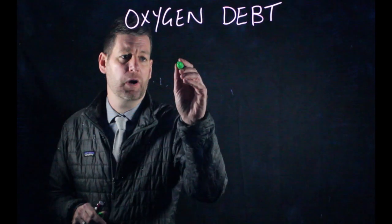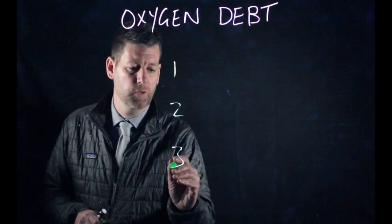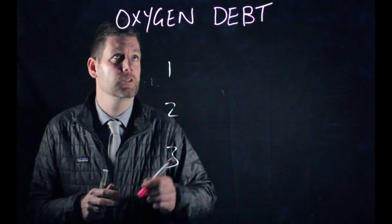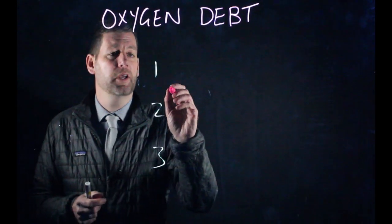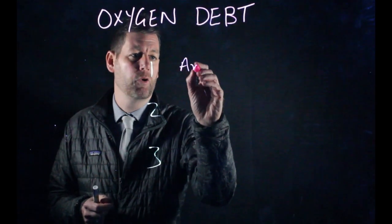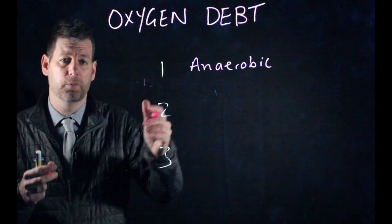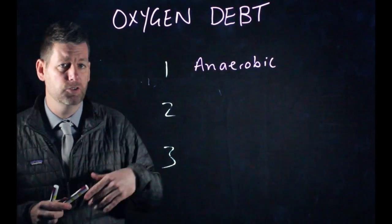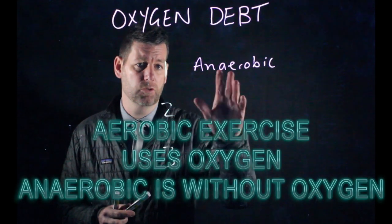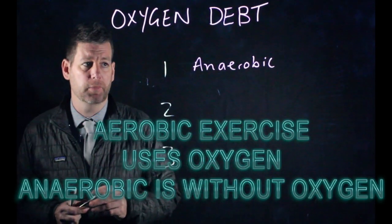In terms of the three things you need to know about oxygen debt, first of all, it's oxygen used in anaerobic exercise. And if you remember what the difference between aerobic and anaerobic is, aerobic exercise is using oxygen, anaerobic is not using oxygen. So that's the first thing to think about.